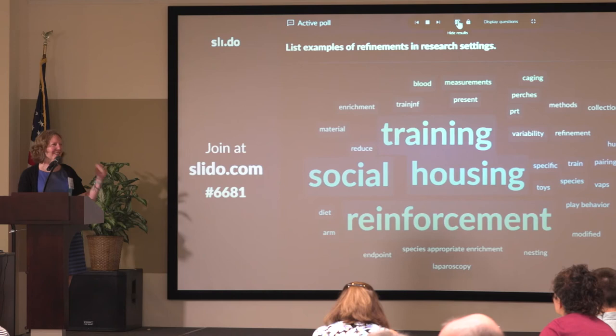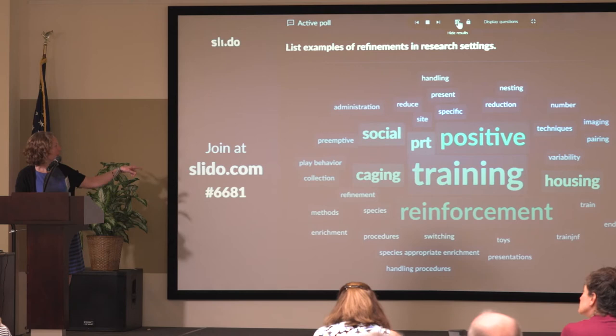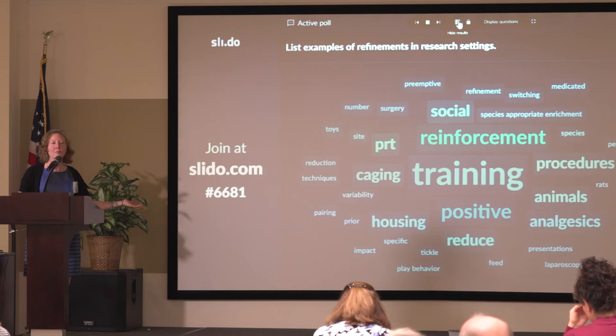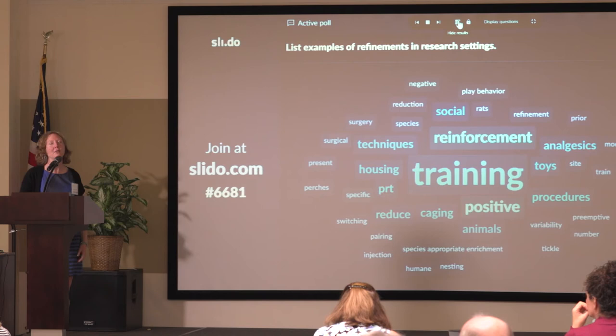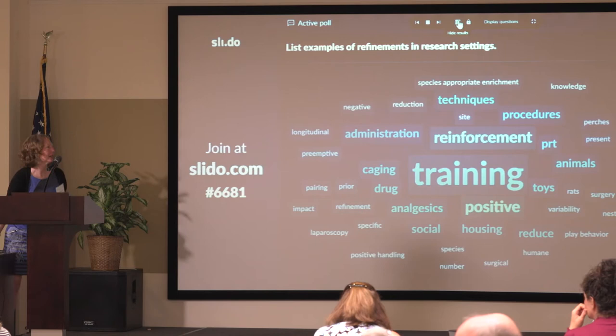We're here for social housing, so yes, that's a great refinement. I keep seeing positive reinforcement training coming up. There are some other things in here too: using imaging, using toys, manipulating enrichment items, interacting with animals like tickling rats, different ways of doing surgery such as laparoscopic approaches that are more minimally invasive, reduction, and enrichment. Thank you all — I'll switch back to my presentation.